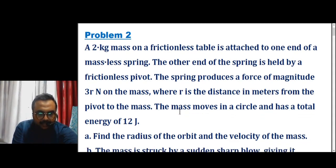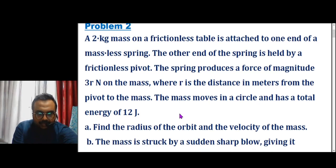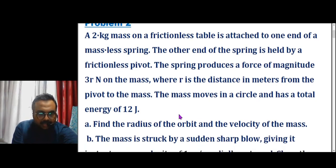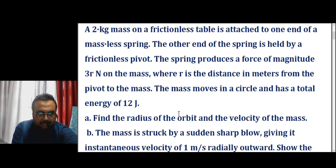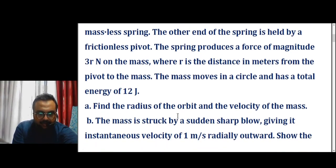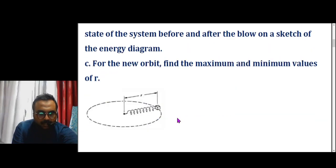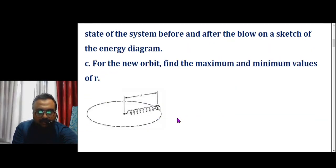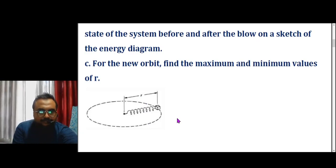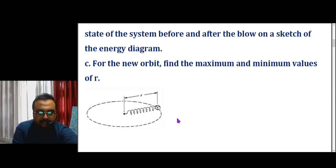Find: (a) the radius of the orbit and velocity of the mass. (b) The mass is struck by a sudden sharp blow giving it an instantaneous velocity of one meter per second radially outward — show the state of the system before and after the blow on a sketch of the energy diagram. (c) For the new orbit, find the maximum and minimum values of r.